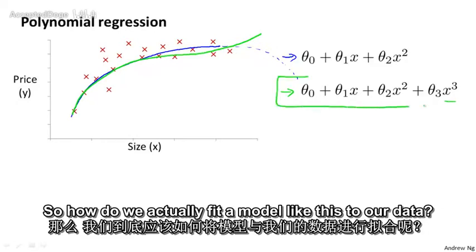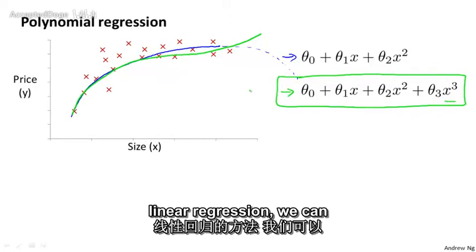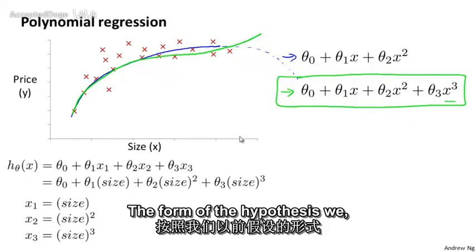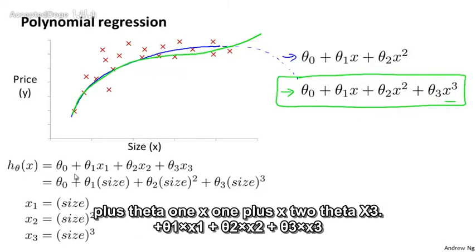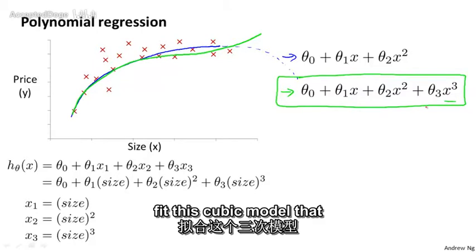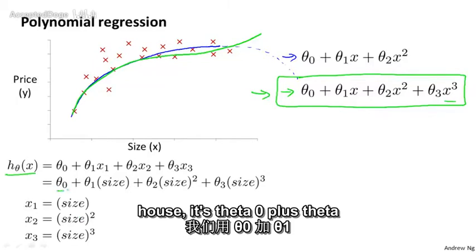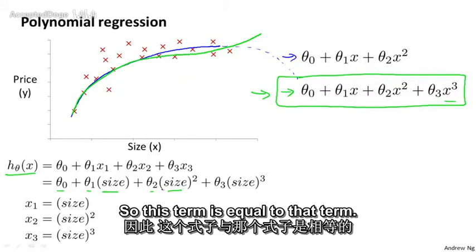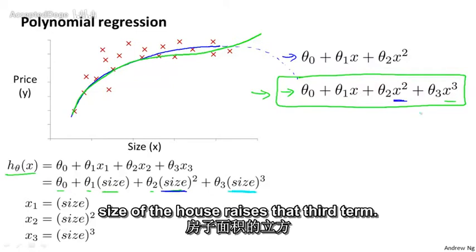So how do we actually fit a model like this to our data? Using the machinery of multivariate linear regression, we can do this with a pretty simple modification to our algorithm. The form of the hypothesis we know how to fit looks like this, where we say that h of x is theta zero plus theta one x one plus theta two x two plus theta three x three. And if we want to fit this cubic model that I have boxed in green, what we're saying is that the predicted price of a house is theta zero plus theta one times the size of the house, plus theta two times the square size of the house. So this term is equal to that term. And then plus theta three times the cube of the size of the house, right? So it's that third term.